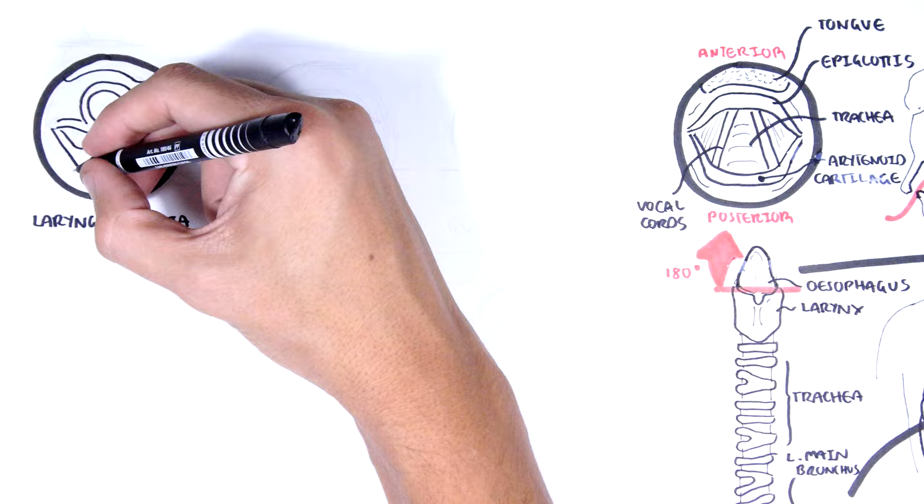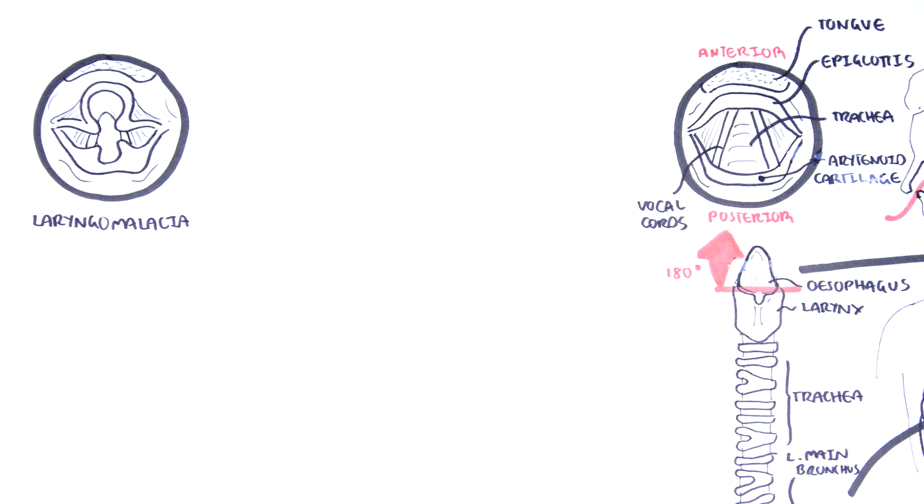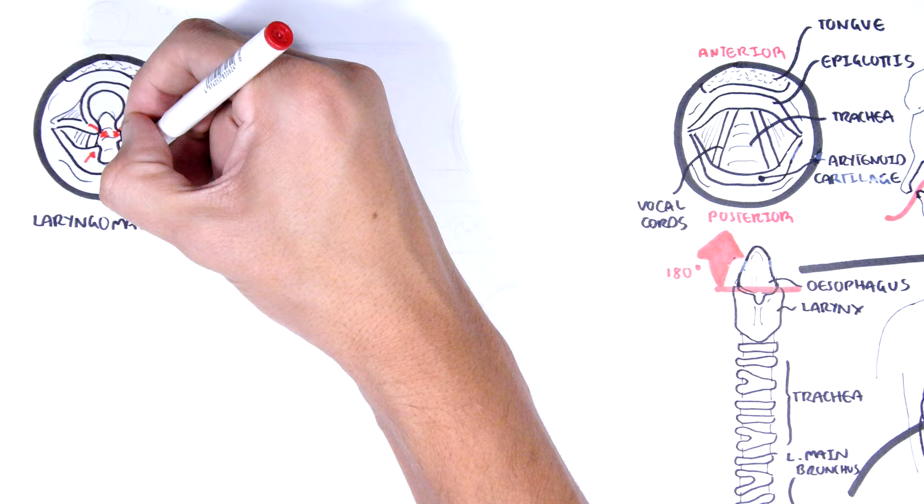Laryngomalacia is the most common cause of chronic stridor in children younger than 2 years, and occurs more commonly in males. It is a congenital cause of stridor and is due to intrinsic deficits in the maturation of the laryngeal structures.